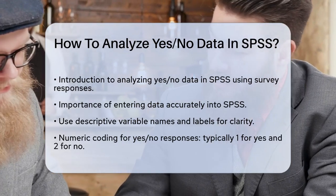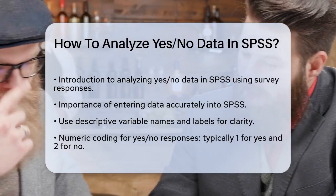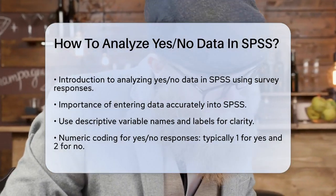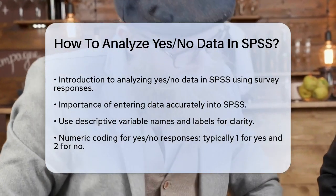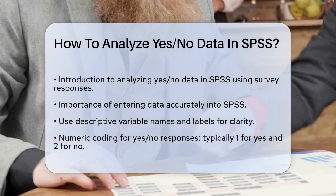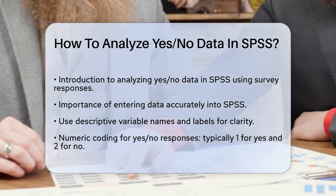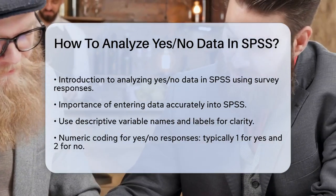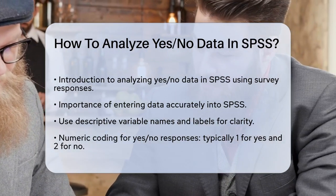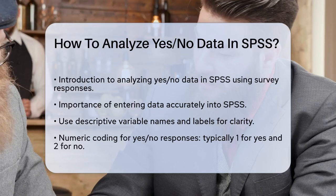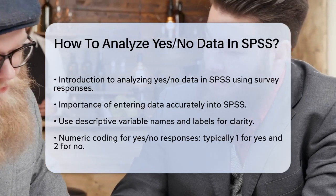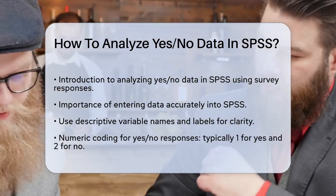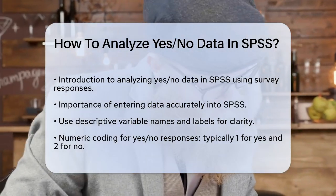First, you need to enter your data into SPSS. When you create your variables, make sure to use descriptive names and labels. For Yes-No questions, you typically use numeric codes, such as one for yes and two for no. In the Variable View section, you can set the type as numeric and add a label to explain what the variable represents.